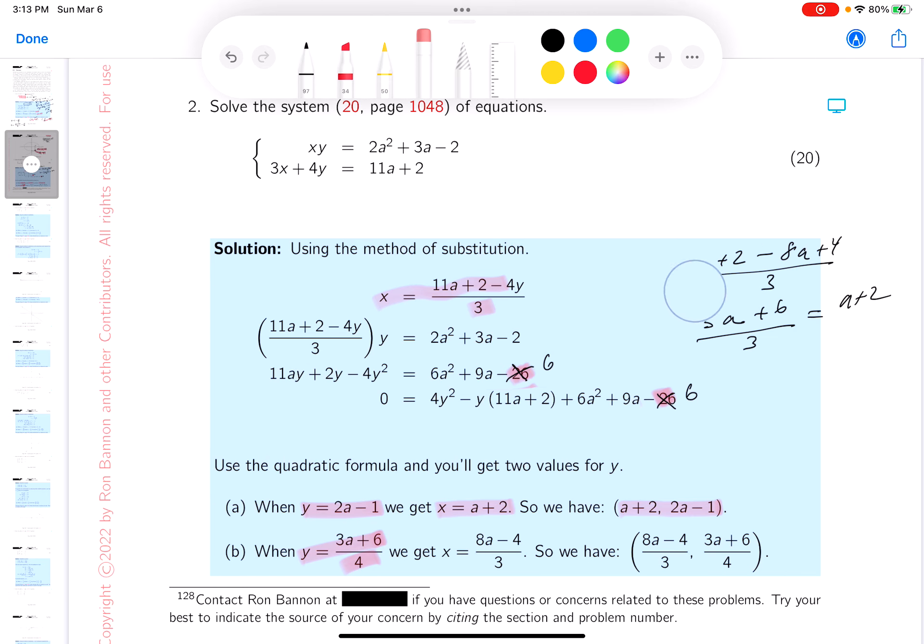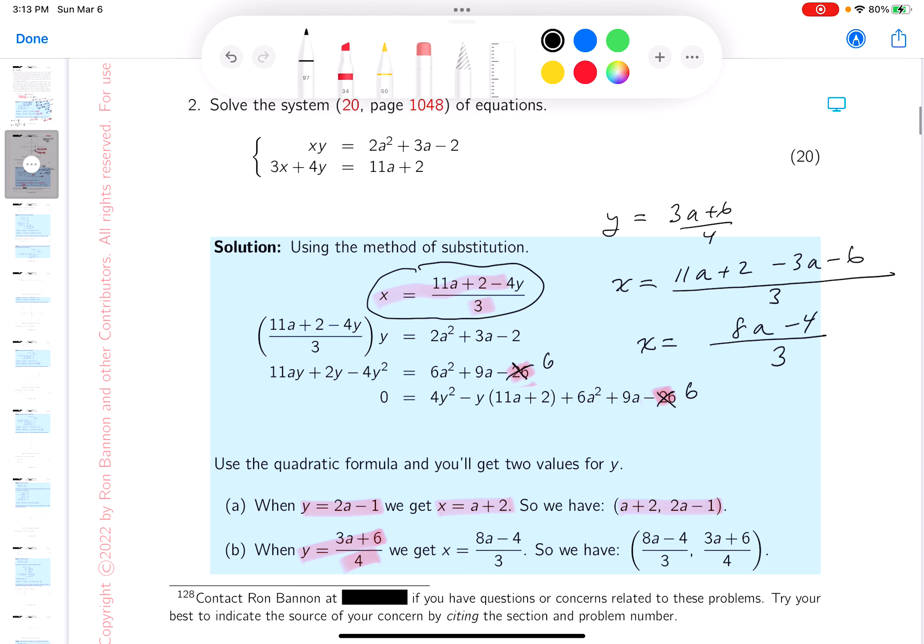Let's go to the next one. We're just talking through the key. Next one's more difficult. The next one is y equals 3a plus 6 over 4. Let's plug it in. Plug it in where? Plug it in here. x equals 11a plus 2. This is over 3. And now it's going to be minus 4 times that. So what's that going to give you? Well, the 4 would cancel off, so you get minus 3a minus 6. Let's keep simplifying it, if we can. So let's see. You get 8a minus 4 over 3.